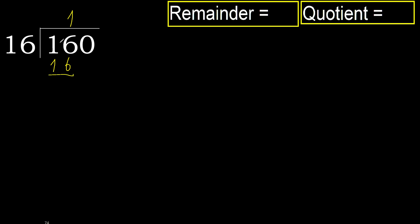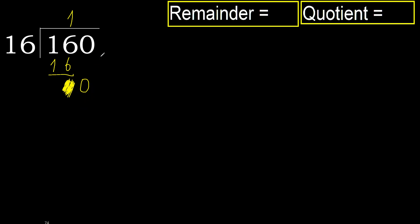Subtract: 16 minus 16 equals 0. Next, eliminate 0 on this side. 0 is less, therefore next.